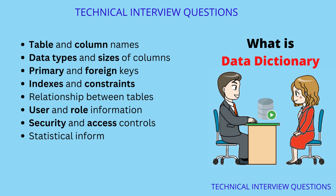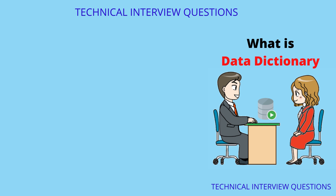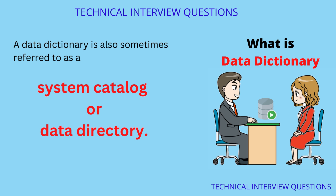Other stored information includes security and access controls, statistical information about the data, and timestamps for when data was created or modified. A data dictionary is also sometimes referred to as a system catalog or a data directory.